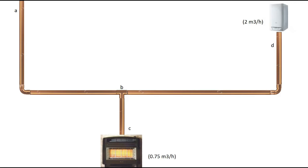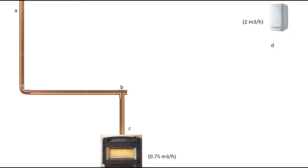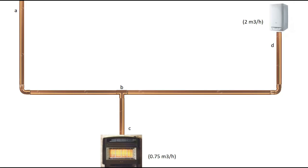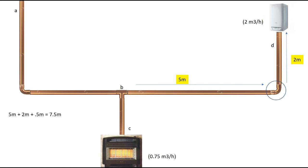That leaves us with the last part of our puzzle, which is B to D. If we take it away, you can clearly see that without that pipe the fire still gets gas, so that pipe is only carrying gas to supply the boiler. The boiler needs two meters cubed per hour of gas. We're saying it's five meters long, then after the bend there's two meters more of pipe — seven meters total — but it's got an elbow in it, and for an elbow you add 0.5 of a meter. So the maths works out as five plus two plus 0.5 equals 7.5 meters.